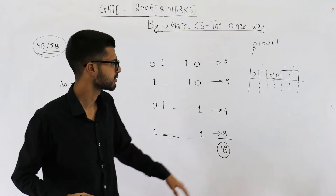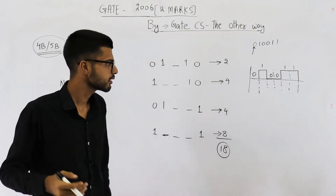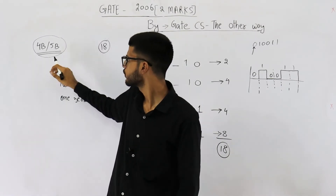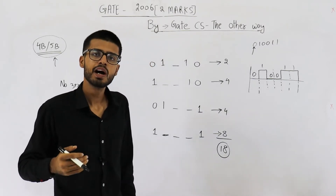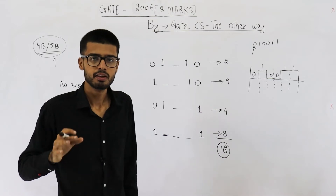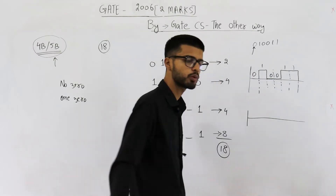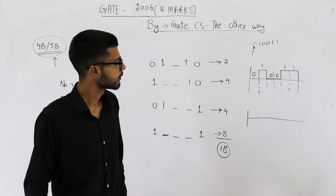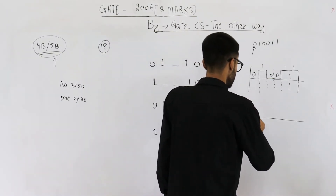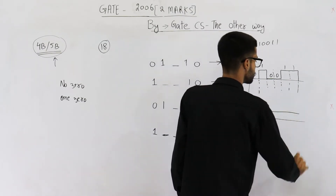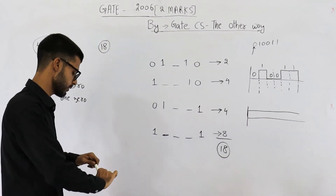But there are a lot of problems with this scheme. The major one relevant for explaining 4b-5b is: if you have multiple zeros or multiple ones, the receiver cannot know exactly how many ones there were. Suppose you are trying to send a continuous stretch of ones — the voltage is continuously high.